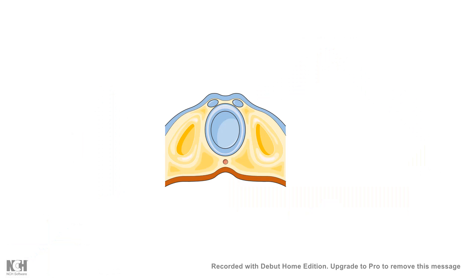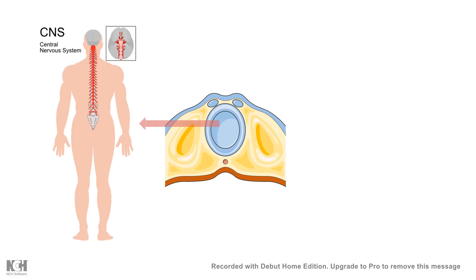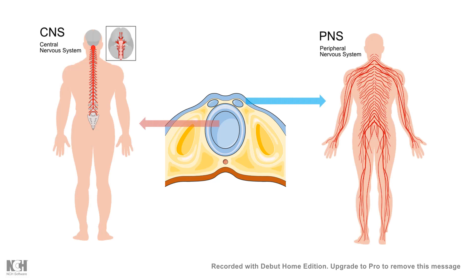The neural tube gives rise to the central nervous system — that is, your brain and spinal cord — whereas the neural crest cells give rise to the components of your peripheral nervous system.